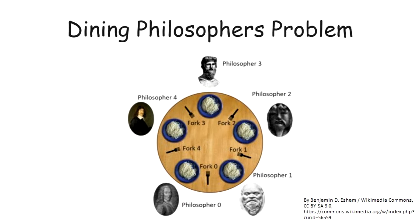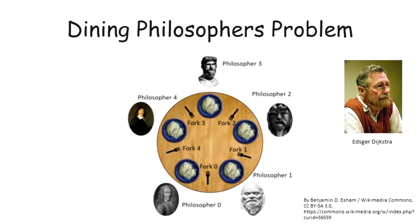In this problem, which was originally formulated by Edsger Dijkstra, we have five different philosophers sitting around the table having dinner together. They have forks right next to their plates and each of them needs to hold two forks to eat. Unfortunately, there are only five forks available at the table, so only two of them can eat at the same time. Also, they can only use the forks that are closest to them. Because of that, no philosopher sitting next to an eating one can start eating until the first one finishes.